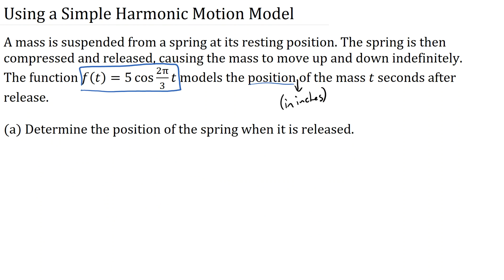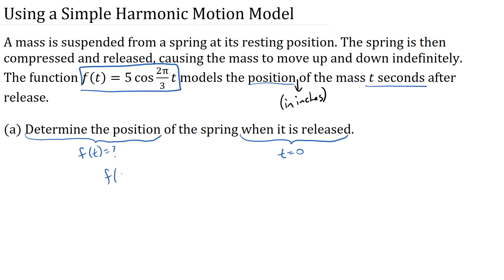We've got our function. We know that t is measured in seconds, and the position is measured in inches, calculated by the output of this function. In question A, we want to determine the position of the spring when it is released. When it is released, we know that the time is zero, so we're going to plug zero into the function. It's asking us to find f of t.